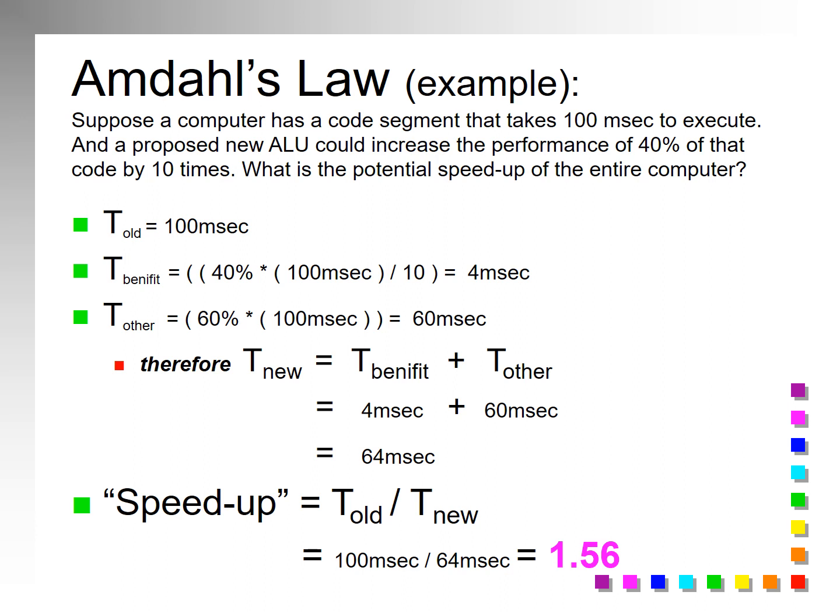So you can imagine if there was no benefit at all, T new would be the same as T old and you'd just have 1 — so there's no speed up. You want to have this number be as big as possible. So 1.56 is your speed up. Notice it's not a 2, so we're not doubling the speed.